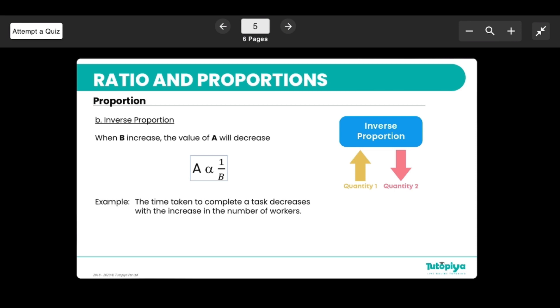With inverse proportion, if b increases, a will decrease, or if a increases, b will decrease. The arrows are the opposite way around. For example, the time to complete a task will decrease if you increase the amount of workers. That brings us to the end of the lesson for today.